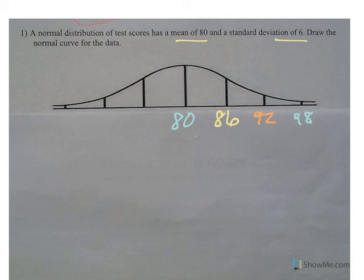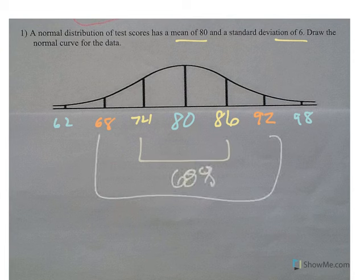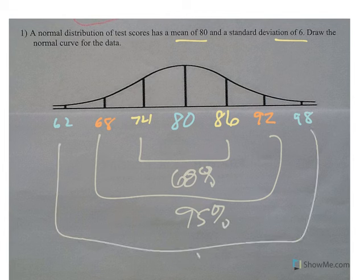When you go to the left, you subtract. So we take away 6 and we're at 74, take away 6 again and we're at 68, take away 6 again and we're at 62. Thinking about the empirical rule: here is 68% of our data, here's 95% of our data, and here's 99.7% of our data.